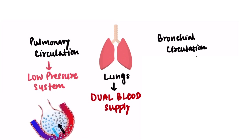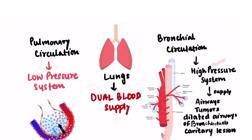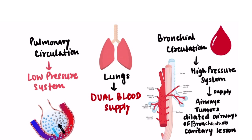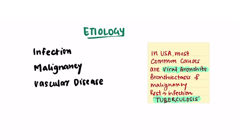The pulmonary circulation is essential for gas exchange at the alveolar level. The bronchial circulation is a high-pressure system as it arises directly from the aorta, and it supplies airways. It is part of neovascularization of tumors, and it supplies the dilated airways of bronchiectasis and cavitary lesions. Because the bronchial circulation is a high-pressure system, most often the cause of massive hemoptysis is this bronchial circulation.